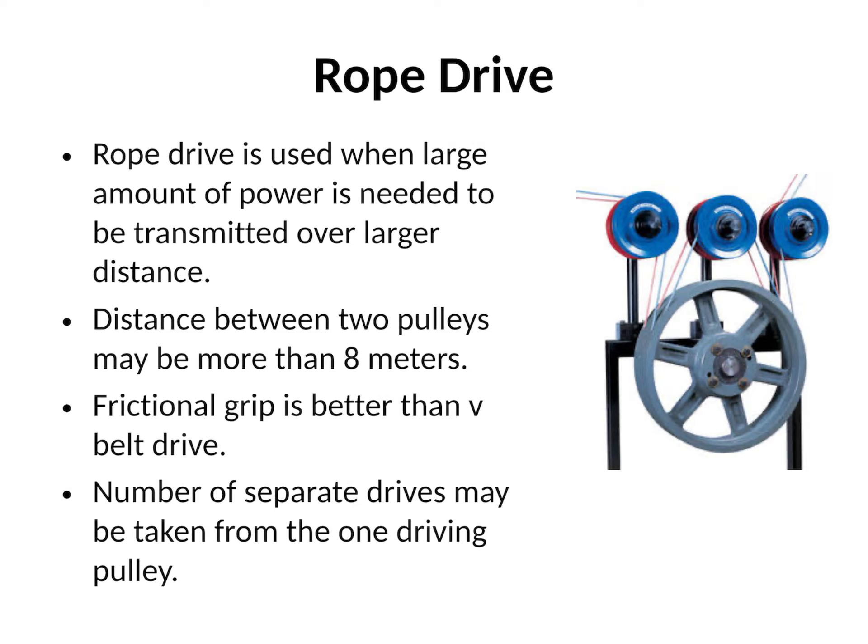Now we are going to see rope drives. These rope drives are generally used when a large amount of power needs to be transmitted over a longer distance. Flat belt drives can transmit power when the distance between the two pulleys is up to 8 to 10 meters. But if the distance increases beyond 8 meters, the cross-sectional area of the belt increases tremendously, causing excessive self-weight and excessive load on the pulleys. That is why belt drives cannot be used beyond 8 meters, and in that case rope drives are better.